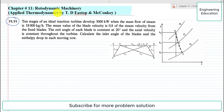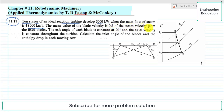From the book Applied Thermodynamics by TDS Topan and Miconkey. The statement of the problem is: 10 stages of an ideal reaction turbine develop 3000 kilowatt when the mass flow of steam is 18,000 kilogram per hour. The mean value of the blade velocity is 0.8 of the steam velocity from the fixed blades, and the exit angle of each blade is 20 degrees.